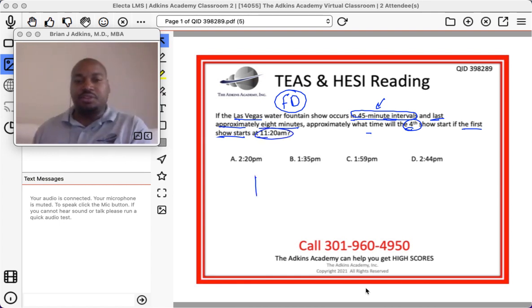If the first show starts at 11:20 a.m., then the next show would start 45 minutes later. The third show would start 45 minutes after the second show, and likewise, the fourth show would start 45 minutes after the third show. When we look at the eight minutes, the eight minutes is here. So there's the eight minutes there.